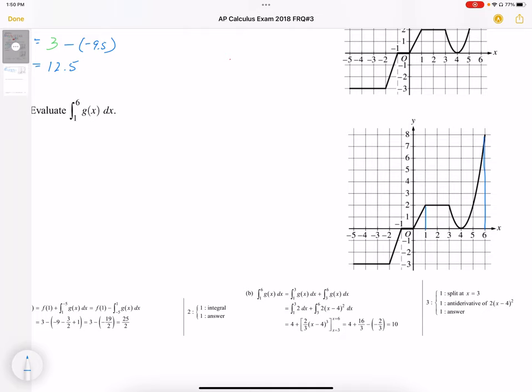Now we need to break this up into two different sections because this is a piecewise function. So we're going to find the area from 1 to 3 separately from the area from 3 to 6.